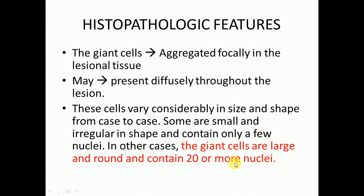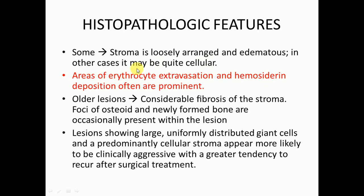In some cases the stroma is loosely arranged and edematous; in other cases it may be quite cellular. Areas of erythrocyte extravasation and hemosiderin deposition are often prominent. In older lesions, considerable fibrosis of the stroma may be present. Foci of osteoid and woven bone are occasionally present within the lesion. Lesions showing large, uniformly distributed giant cells and a predominantly cellular stroma appear more likely to be clinically aggressive, with a greater tendency to recur after surgical treatment.